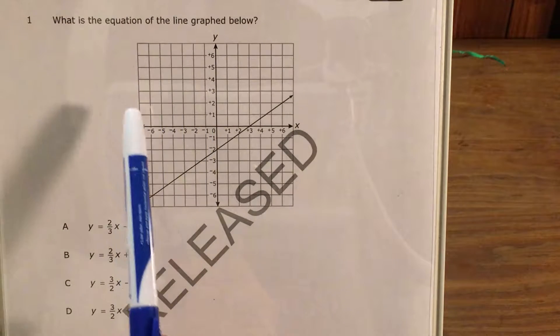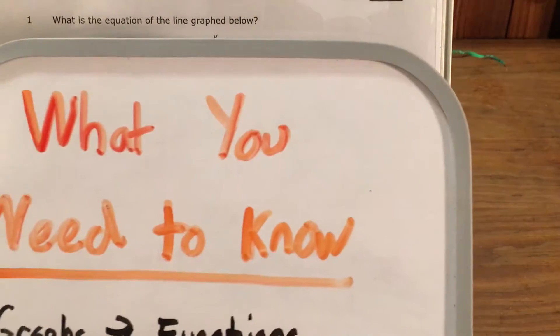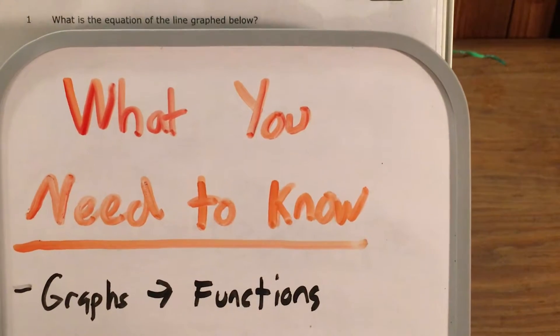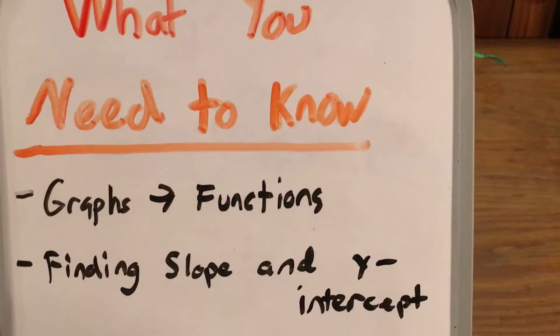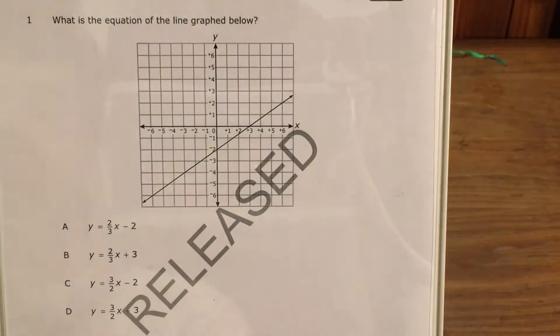This question is only asking us to find the equation of this line that's graphed for us down here. So in order to do a problem like this and do it well, we're going to need to know how to translate between graph language and function language, and specifically we're going to have to find the slope and y-intercept from a graph.